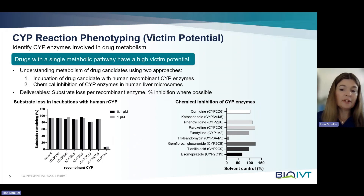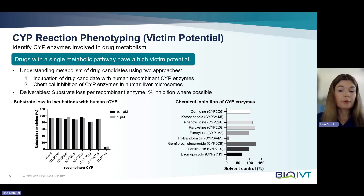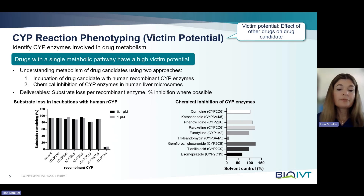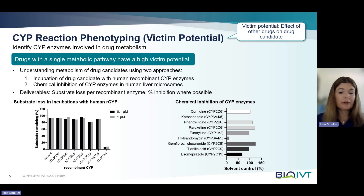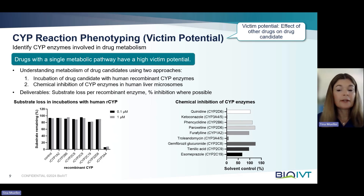The last study type assessing metabolism of drug candidates is reaction phenotyping. This assay identifies metabolizing enzymes that are involved in drug metabolism and is considered a part of the victim potential evaluation. A victim — also called an object — is a drug whose fate in the body is affected by the presence of another drug, and drugs with a single metabolic pathway have a high victim potential. Regulatory guidelines recommend using two approaches to evaluate reaction phenotyping: incubation with human recombinant CYP enzymes and chemical inhibition of CYP enzymes, most commonly done in liver microsomes.